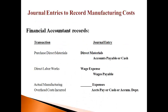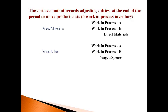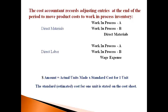Let's take a detailed look at the entries made to record manufacturing costs by the financial accountant. The financial accountant records direct materials purchased to an inventory account. Direct labor is recorded as an expense. Manufacturing overhead costs incurred are also recorded as expenses. The cost accountant makes adjusting entries at the end of the period to move product costs to work in process so they are not expensed in the period incurred and the matching principle is followed. The amount in the journal entry is always the standard cost of making all units during the period. The standard cost for one unit is an estimated cost that was determined when the cost sheet was prepared. This is done for each product made.